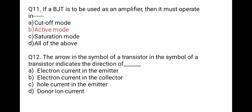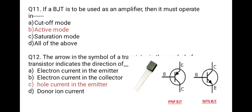The next question: the arrow in the symbol of a transistor indicates the direction of — first: electron current in the emitter; second: electron current in the collector; third: hole current in the emitter; last: donor ions current. The correct option is hole current in the emitter. There are two transistors — PNP and NPN. The arrow is located on the emitter terminal and indicates the direction of conventional current, which flows from positive to negative — this is the direction of hole flow. So hole current in the emitter is correct.